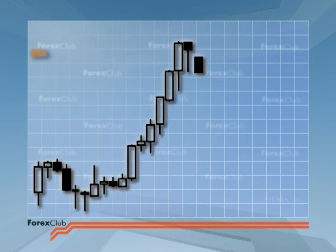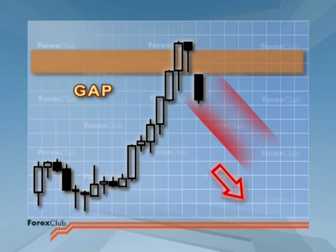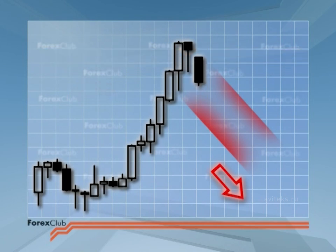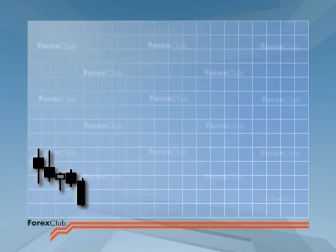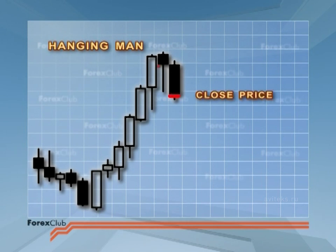If the next candle opens below the hanging man's body, those who had bought within the body of the hanging man would be left exposed and in danger of finding themselves in a far worse position. A gap is the traditional confirmation of the hanging man's reversal signal. And the wider the gap, the more emphatic the confirmation. Of course, we know that price gaps are less frequent on the Forex market than they are on the commodities and equities markets. And for Forex, an alternative bearish confirmation is that the candle stick following the hanging man is black, with price maxing and closing lower than the hanging man's max and close.